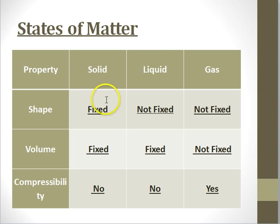Now, for solid, they have fixed shape. If it's a square solid, it will be a square solid. For liquid, it's not fixed. When you put, for example, water in various containers, it takes on the shape of the container. So, that's why it's not fixed. Same for gas.